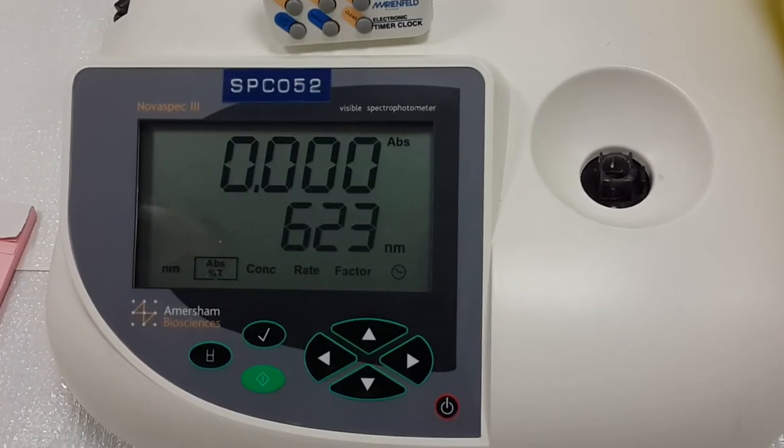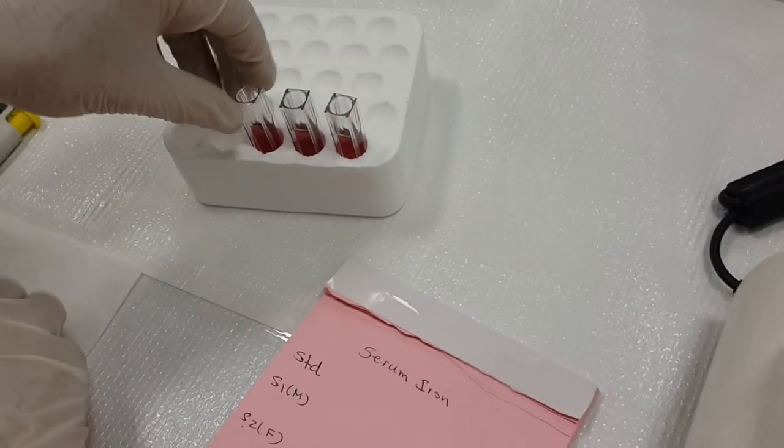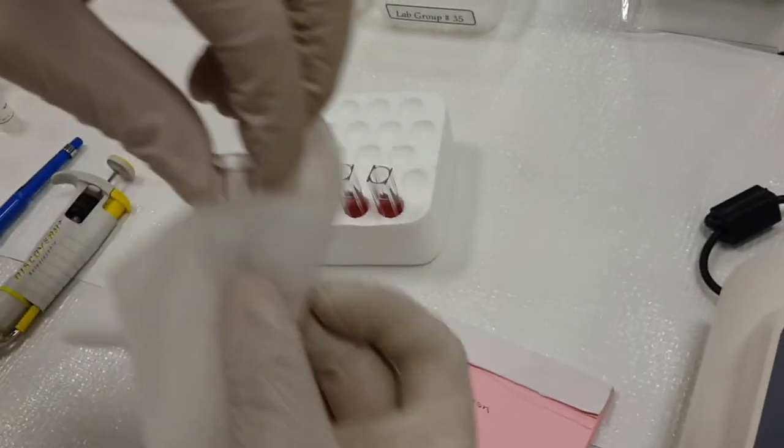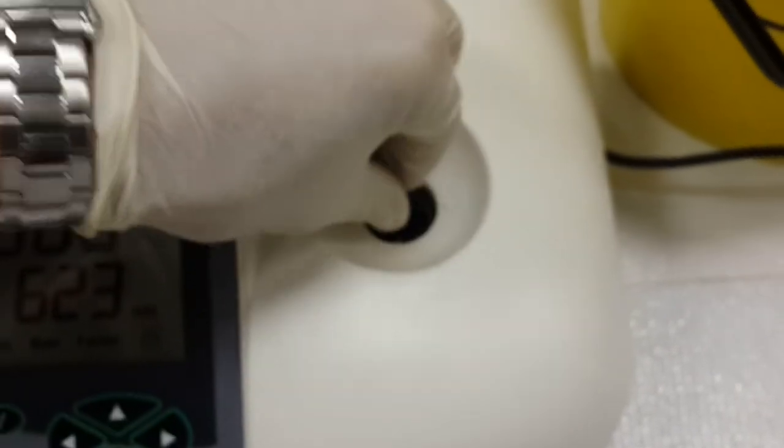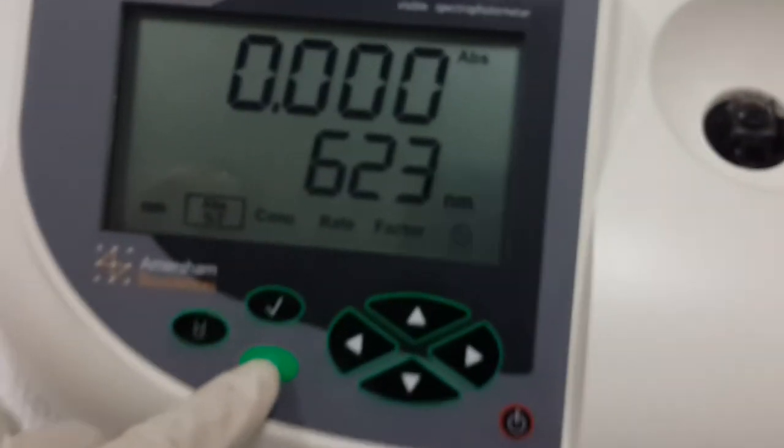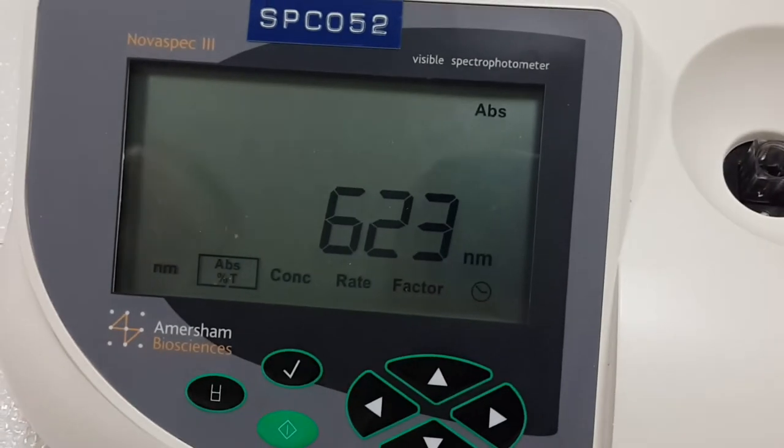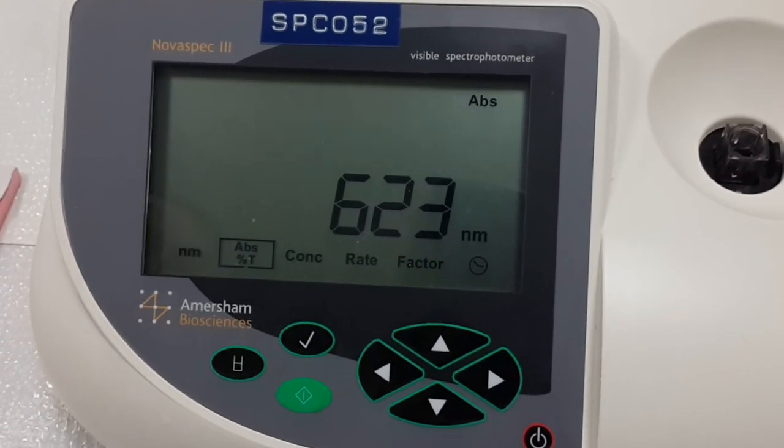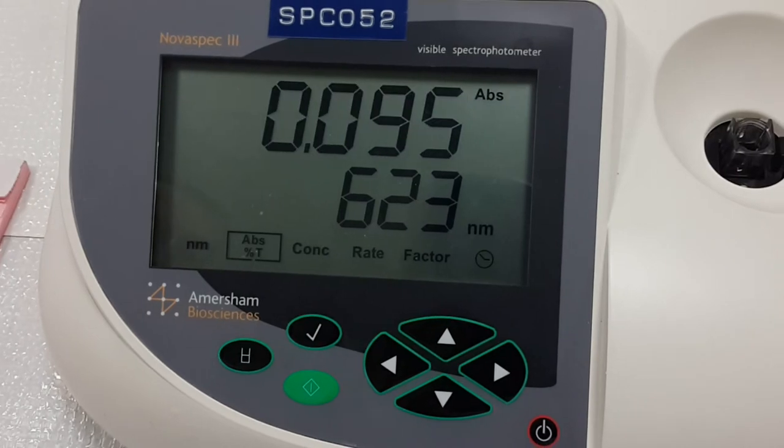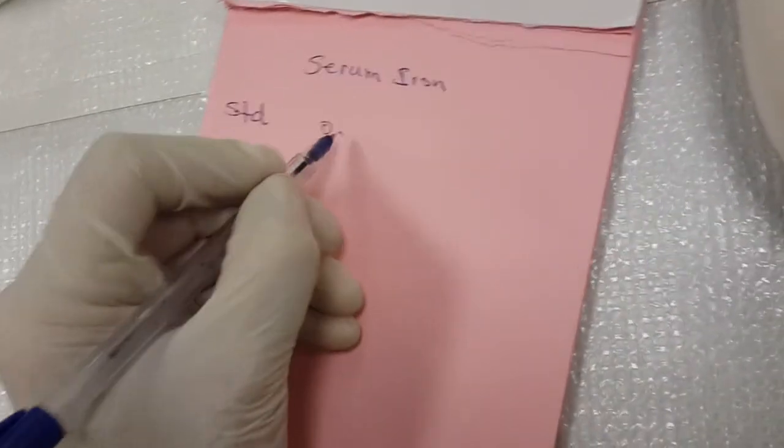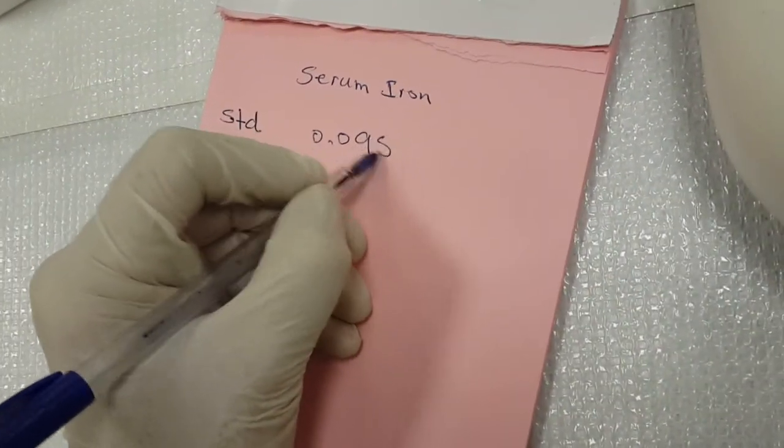It's ready. Remove this one, take the standard. The same thing, clean, put it inside, and push the green button and take the absorbance. It's 0.095.